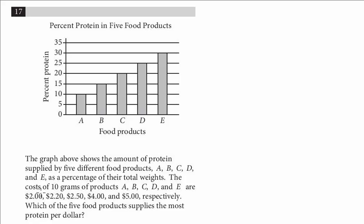So, to get protein per dollar, we have the cost of all these products. What I will first do is just correspond the cost with the products. We know A is $2, B is $2.20, C is $2.50, D is $4, and E is $5.00. This is the cost of the products, and we want to see which has the most protein per dollar.